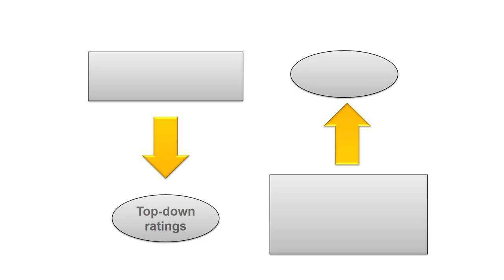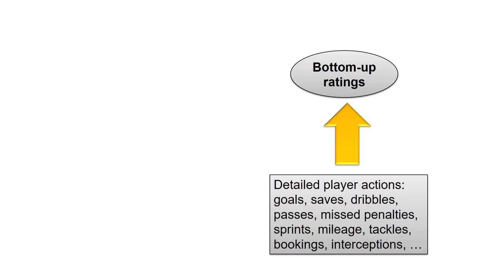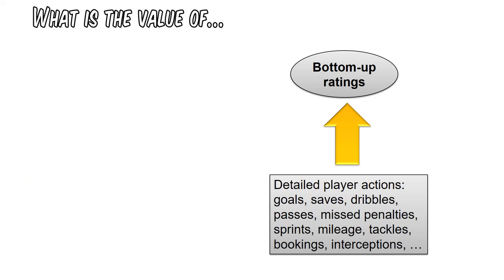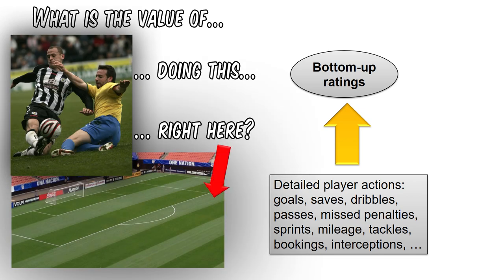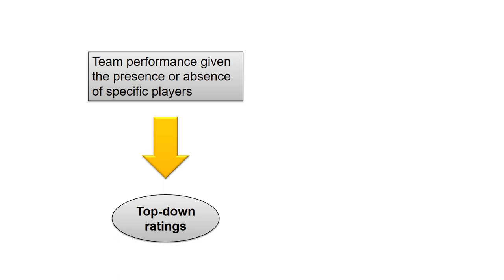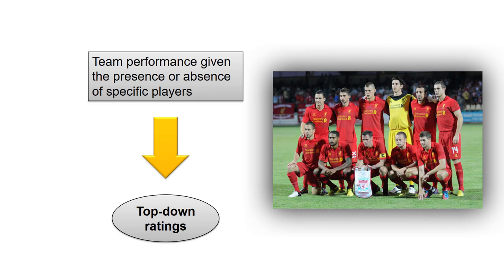Metrics trying to accomplish this can typically be categorized either as top-down metrics or bottom-up metrics. The bottom-up paradigm is based on calculating the value of each action taken by every player and then calculating a rating for a player based on the total value of all actions taken by that player. This involves estimating the value of, say, performing a successful tackle just outside the box, in terms of its contribution towards scoring the next goal. The top-down paradigm is based on looking at the performance of the team as a whole and then distributing the credit for that performance on the individual players involved.